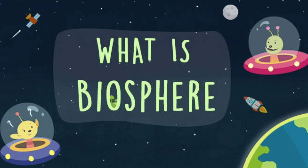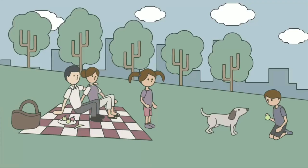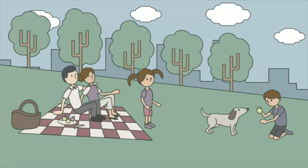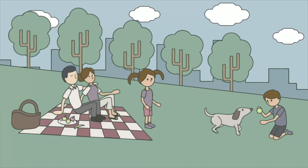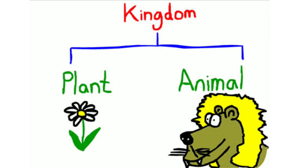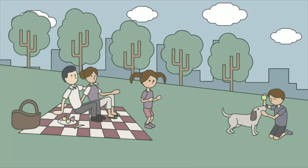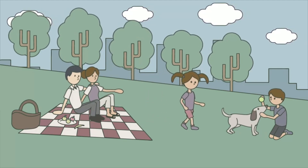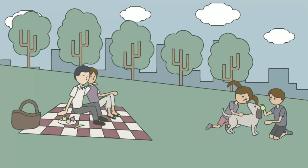The biosphere is the narrow zone of contact between the land, water, and air. It is the zone where life exists, and that makes this planet unique. The organisms in the biosphere are commonly divided into the plant kingdom and the animal kingdom. The domains of the Earth interact with each other and affect each other in some way or the other.